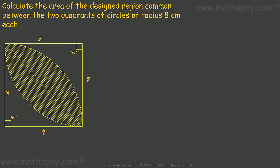Now, to get the area of this shaded region, what we need is the area of this quadrilateral. Let's see if this quadrilateral is a square. I name it as A, B, C and D. AB, BC, CD, and AD are equal.